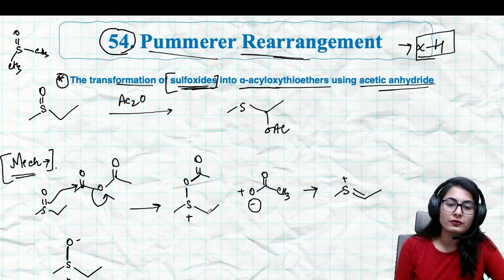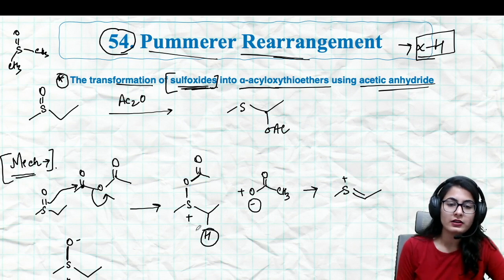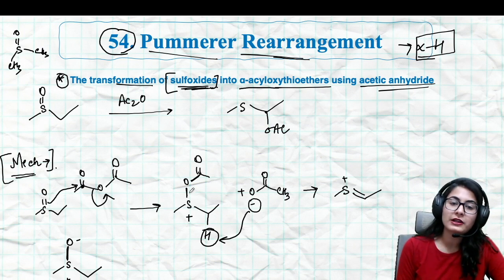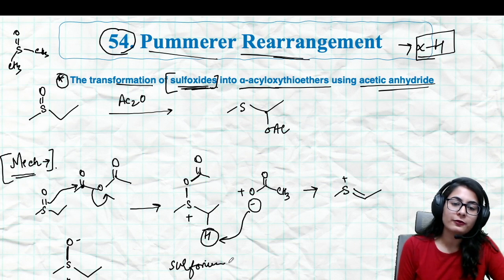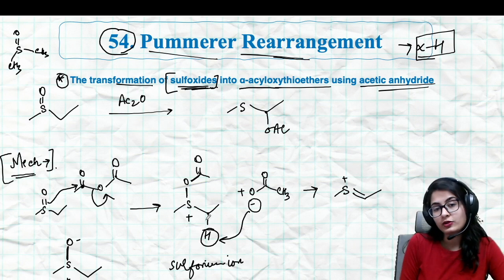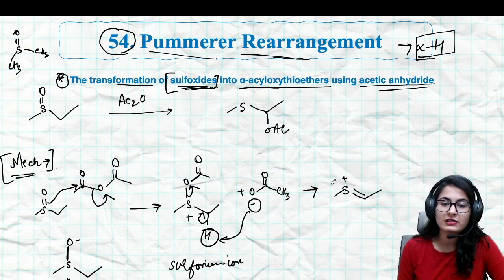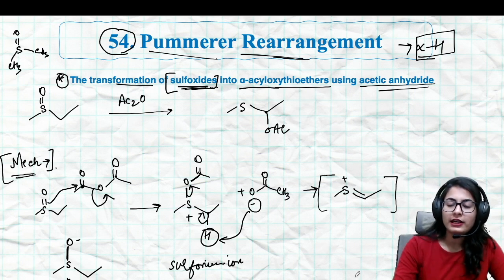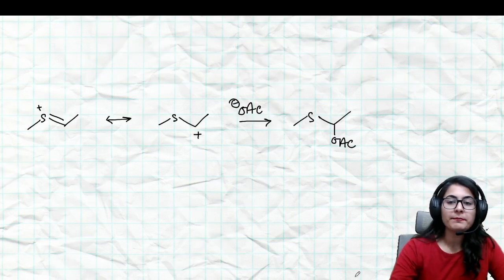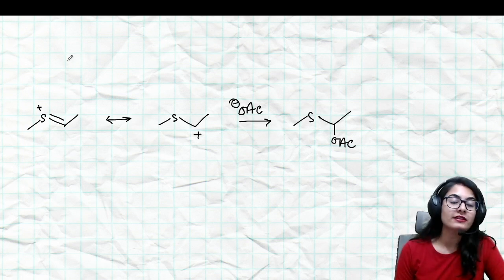The other acyl group which has eliminated removes the alpha proton from the sulfur, because sulfur has a positive charge and this becomes a sulfonium ion. The sulfur has a positive charge and the alpha carbon has a very acidic proton which could be removed in this way, so you get a sulfonium ion once again, just with the removal of oxygen. This is your intermediate.